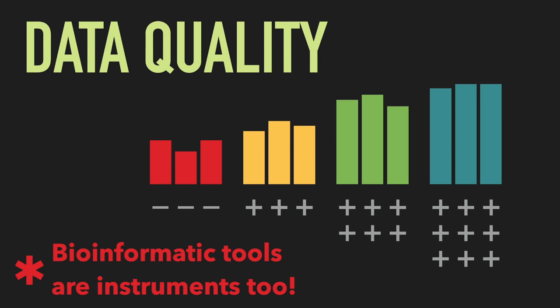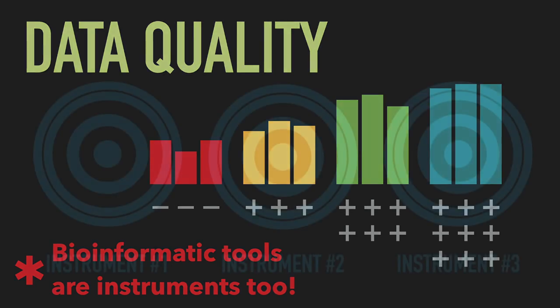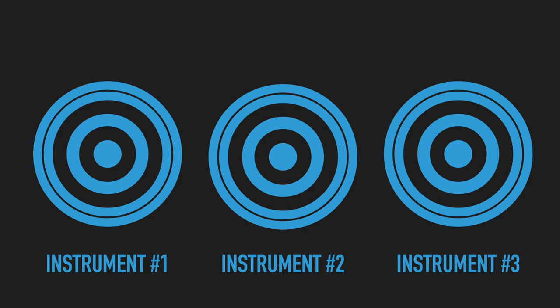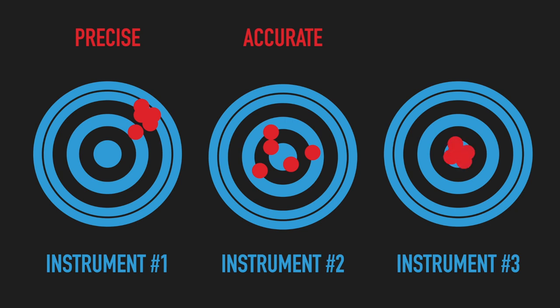Let's begin by making the distinction between precision and accuracy. A popular way of representing these concepts is with a target practice. In this case, we are evaluating three instruments. The first instrument is highly reproducible — it generates very similar results under similar conditions, meaning it is very precise, even if it doesn't really hit the bullseye. The second instrument, on the other hand, tends to produce measurements very close to the actual target, meaning it's very accurate, though notice that it has a greater spread. Finally, the third instrument is highly reproducible and also generates measurements very close to the target, so it is both precise and accurate.